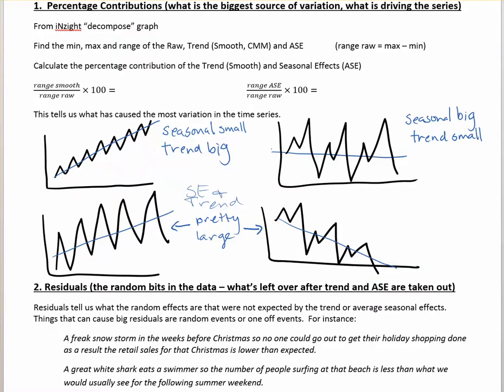Alright, so I just wanted to talk to you guys quickly about one of the key things that you can look at to talk a little bit further about your assessment. It shows a little bit deeper understanding or some critical thinking. One thing we can think about is what we call percentage contributions, and looking for what's the biggest source of variation within the series.